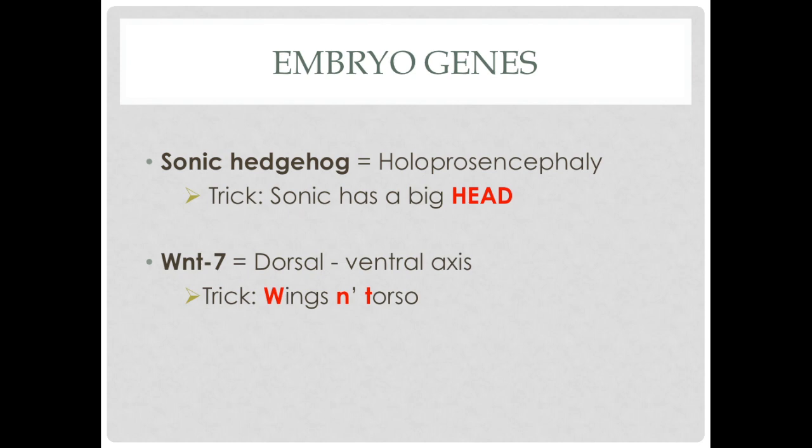Wnt7 is responsible for the dorsal to ventral axis. My trick is to think of wings and torso — wings being the dorsal part and torso being the ventral part.